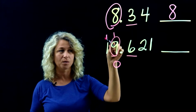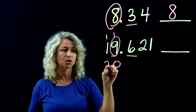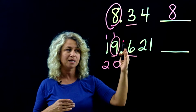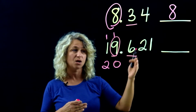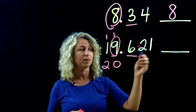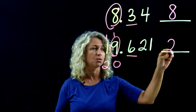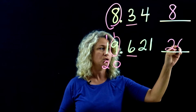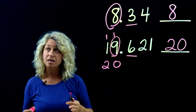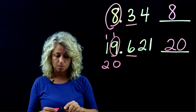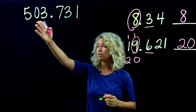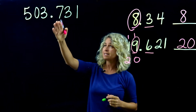Adding 1 to the carried-over 1: 1 plus 1 is 2. So 19 and 621 thousandths rounded to the nearest whole number becomes 20.